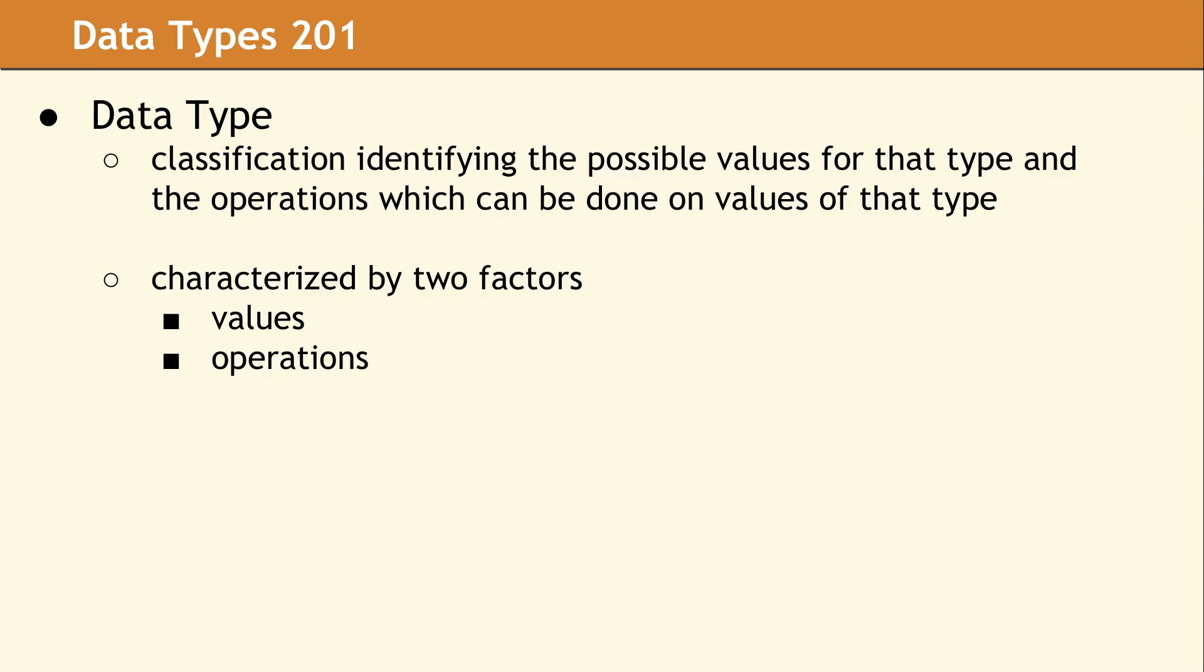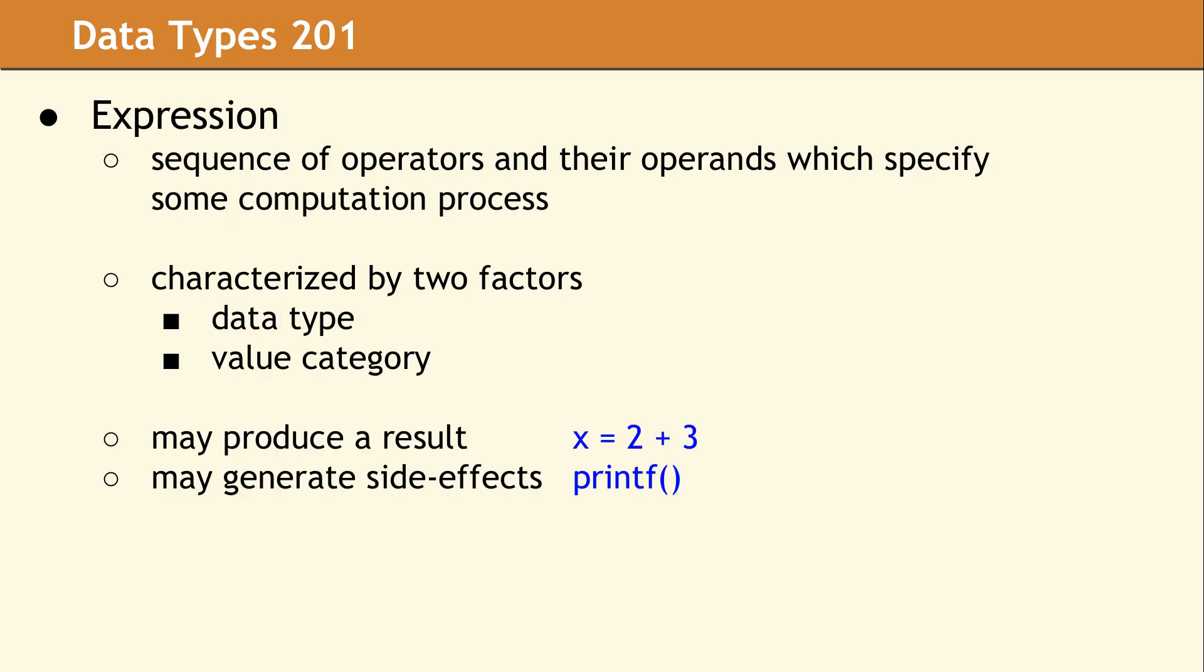As a brief review, a data type is nothing more than a classification consisting of values and the operations which can be done on those values. A data type is completely defined by these two items. An expression is a combination of a data type and a value category. Syntactically, it looks like a sequence of operators and their operands, and it specifies some computation that is to be performed.